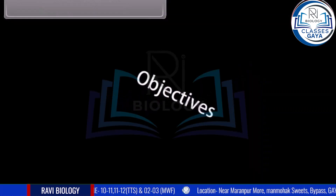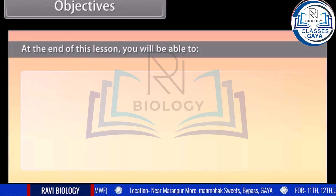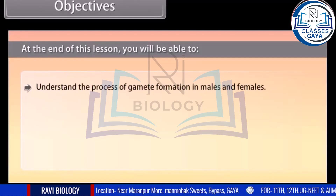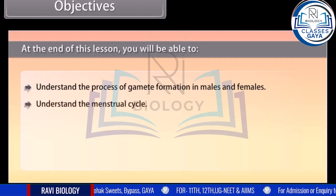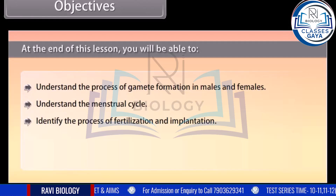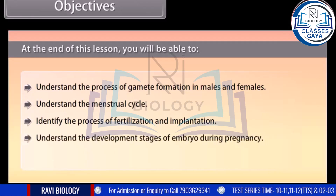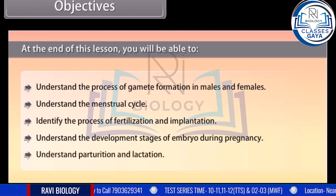At the end of this lesson, you will be able to understand the process of gamete formation in males and females, understand the menstrual cycle, identify the process of fertilization and implantation, understand the development stages of the embryo during pregnancy, and understand parturition and lactation.